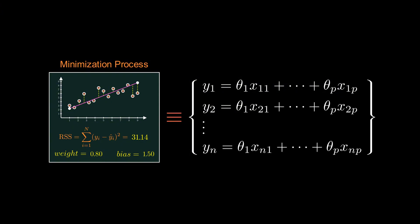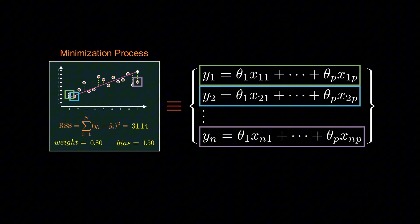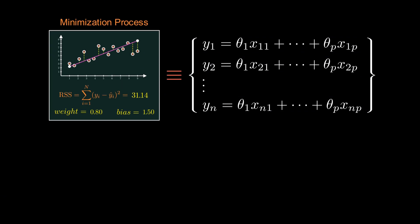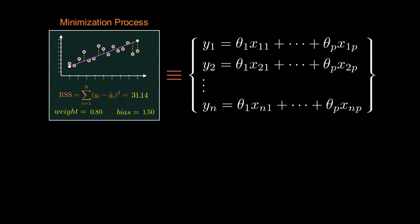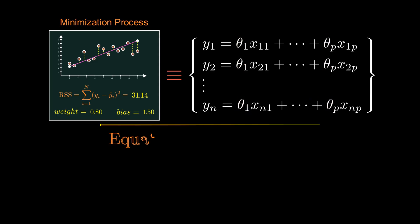If you think about it, every independent row of a data set can be seen as one equation in such a system. Mathematically, to solve for all free parameters, we need at least as many independent equations as parameters.